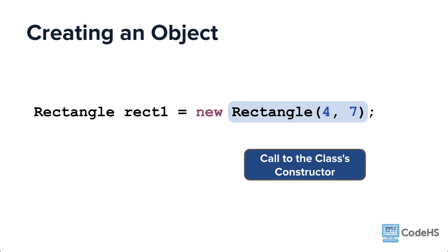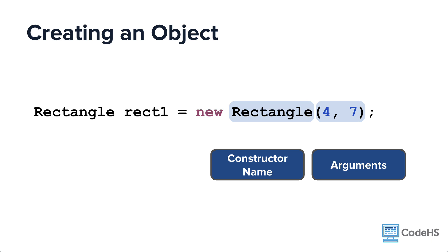The new operator allows you to create a new object by making a call to what is known as the rectangle class's constructor. The call to the constructor contains two components, the constructor name, which must be the same as the class name, and the arguments. Arguments are the actual values that are being sent into the constructor in order to give this new object unique attribute values. So what exactly is a constructor?